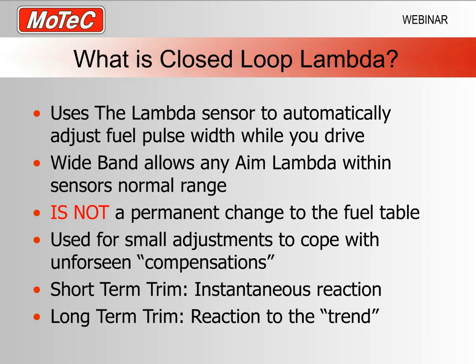What is closed-loop lambda? Basically, we use a wideband lambda sensor into the ECU. The function keeps an eye on what reading the sensor is giving, and we also have an aim lambda from our lambda table. The closed-loop function works out if there's a difference between our aim lambda — where we want lambda to be — and the actual lambda sensor reading. If there's a difference, it modifies the fuel pulse width either up or down to eliminate that error.